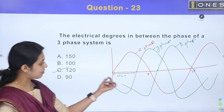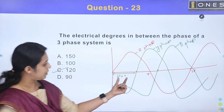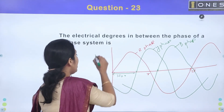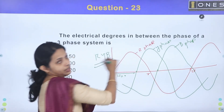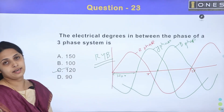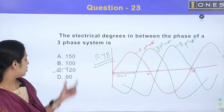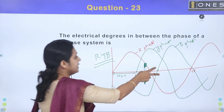R-phase is 120 degrees, Y-phase is 120 degrees, B-phase is 120 degrees. So if we have the R, Y, B phase sequence, the answer is Option C: 120 degrees.